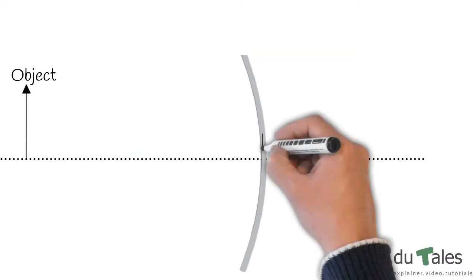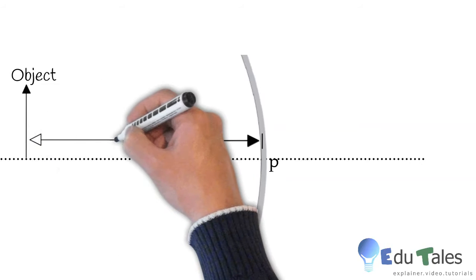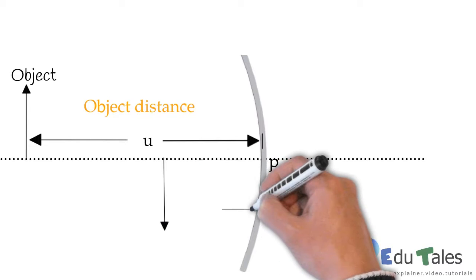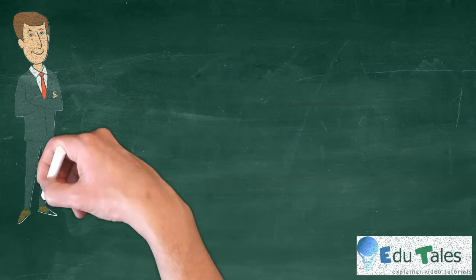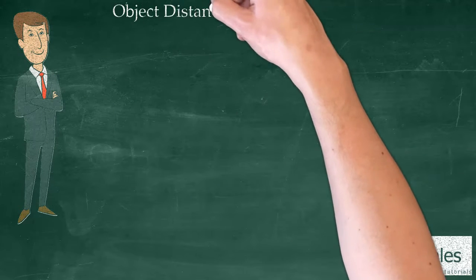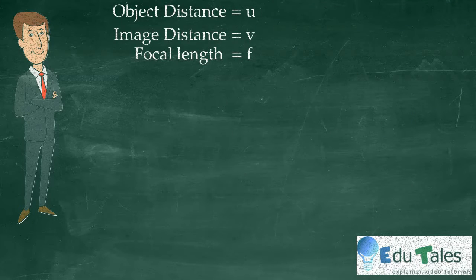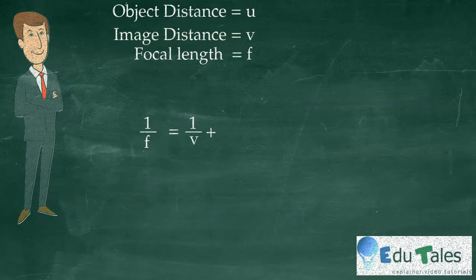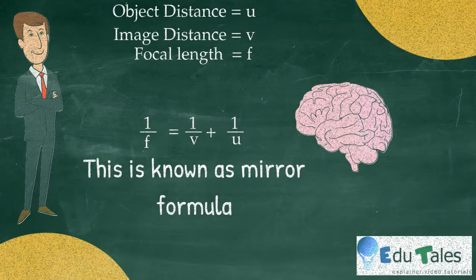In a spherical mirror, the distance between the object and pole of the mirror is called object distance u, while the distance between the image and the pole is called image distance v. Now there is a relation between the object distance u, image distance v, and focal length f, which is given by 1/f = 1/v + 1/u. This formula is valid for all spherical mirrors in any situation.